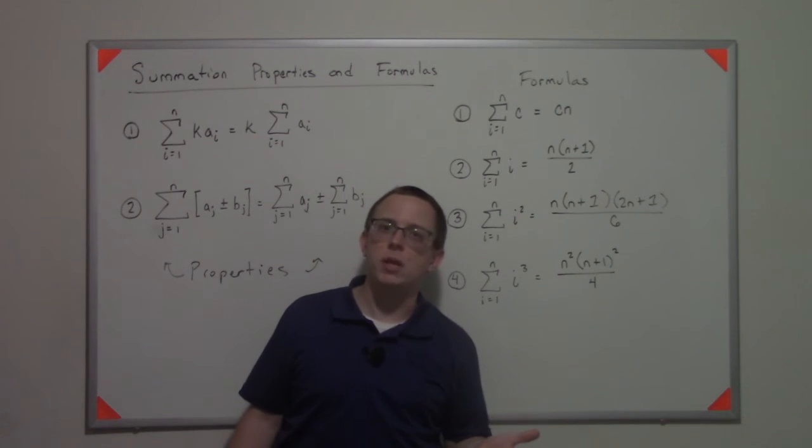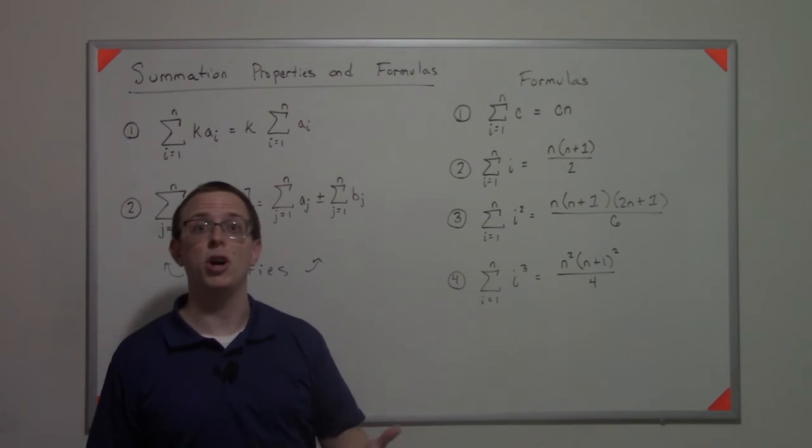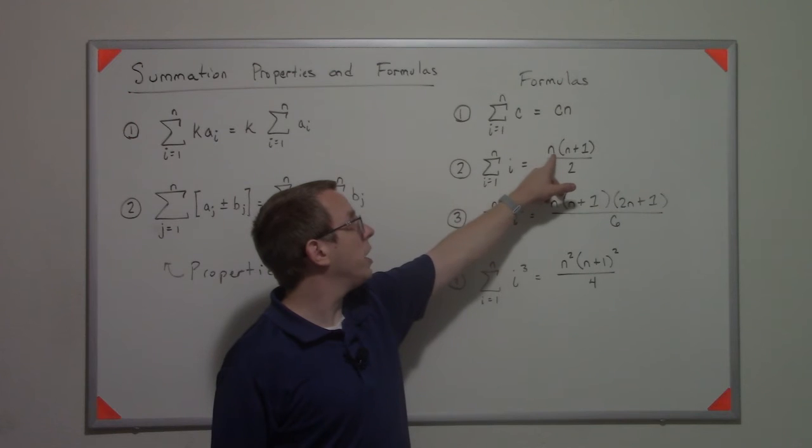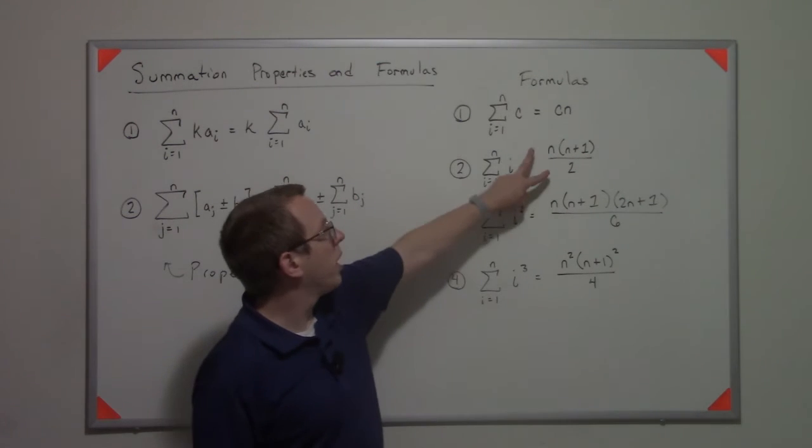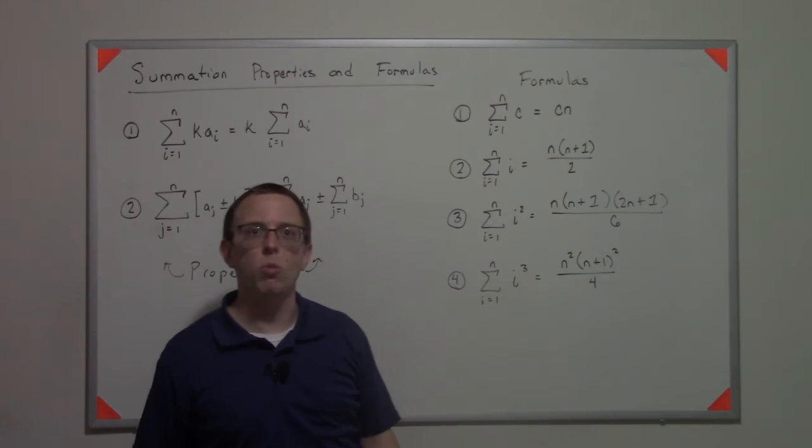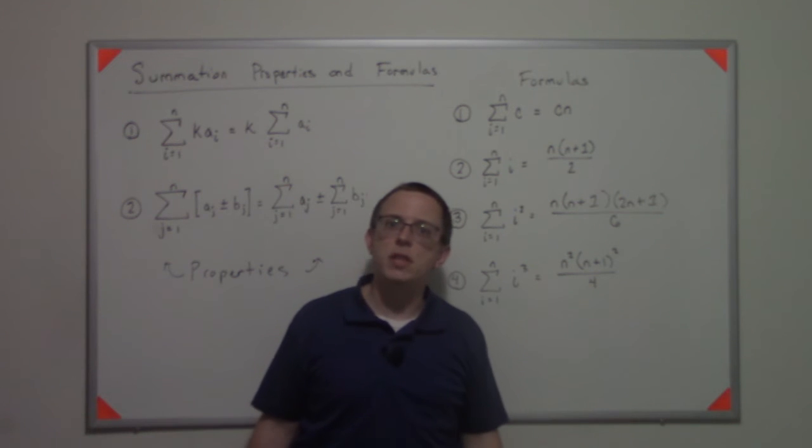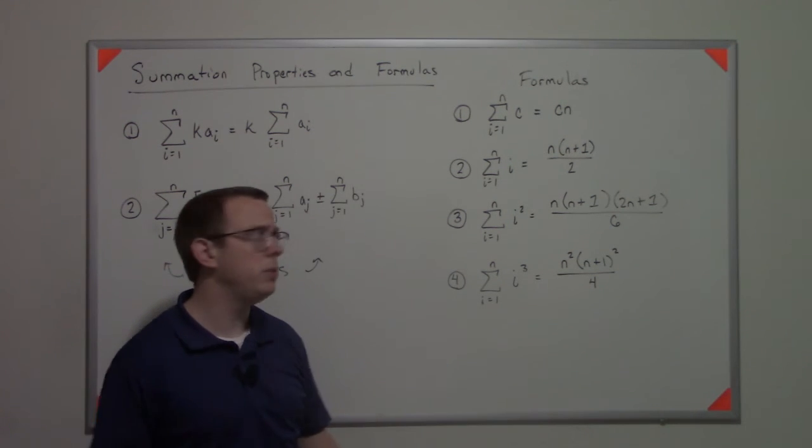You might say, okay, that's not a big deal, I can sum up one to five. That's true. But what if you had to sum up one to a hundred? That would take you a while, but instead you could just say a hundred times a hundred and one over two, which would be like saying 50 times a hundred and one, which is 5,050. So that's a really simple way to do that.